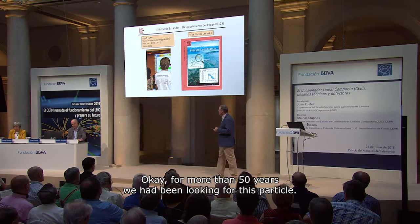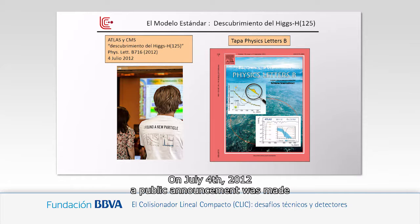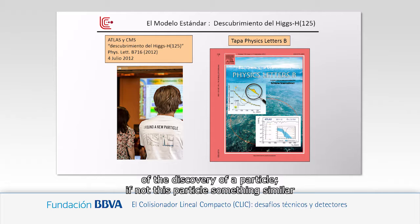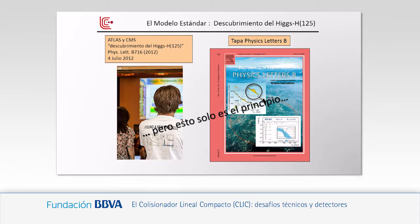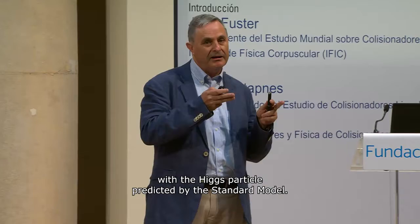For more than 50 years, this particle was searched for, and finally it was found at CERN. On July 4, 2012, the public announcement was made of the discovery of a particle — if not that exact particle, something that seemed compatible with it. But once discovered, the next step is to understand what that particle is, to measure its properties and see if it exactly corresponds to the Higgs predicted by the standard model.